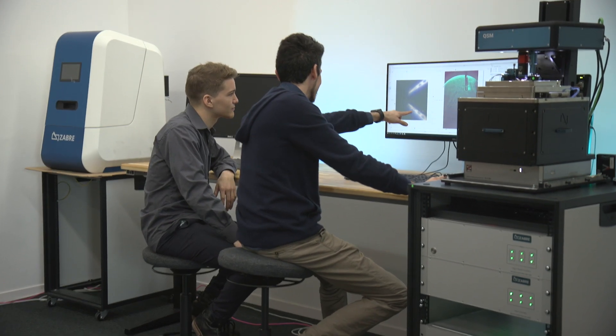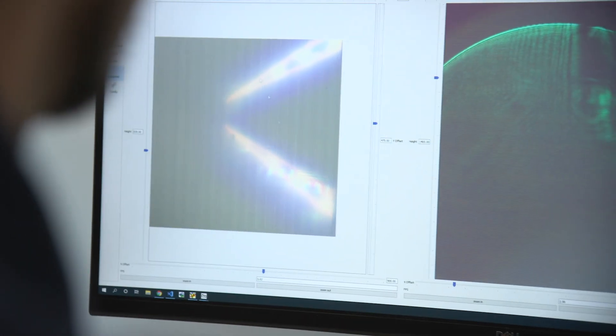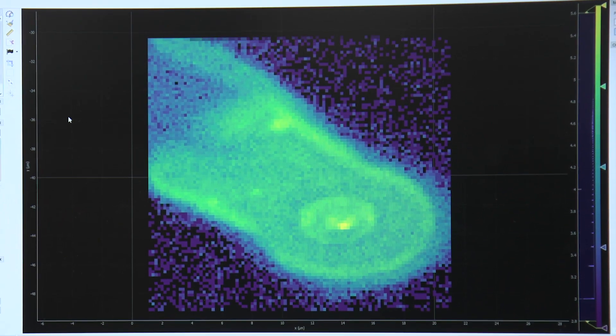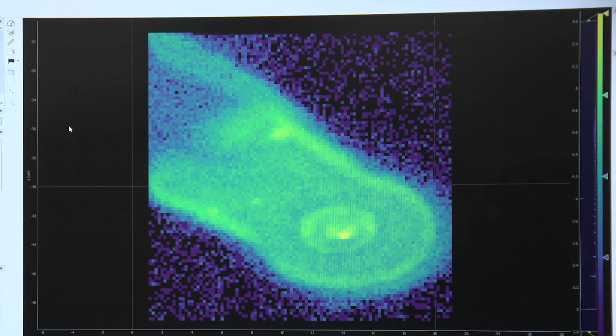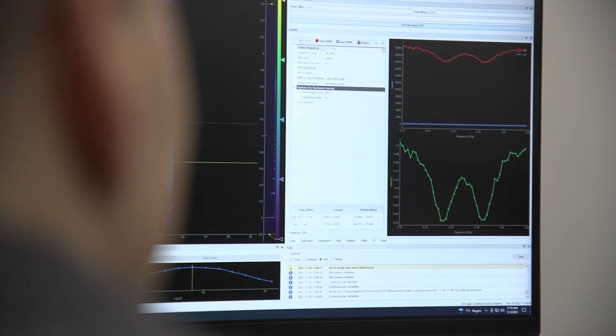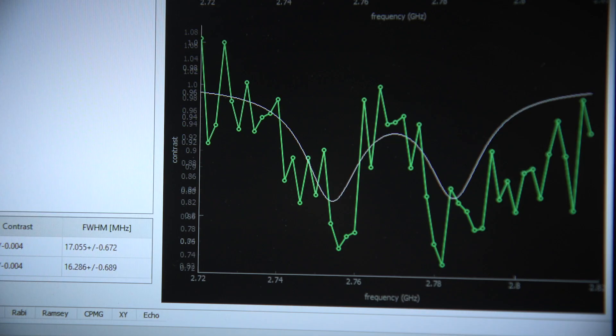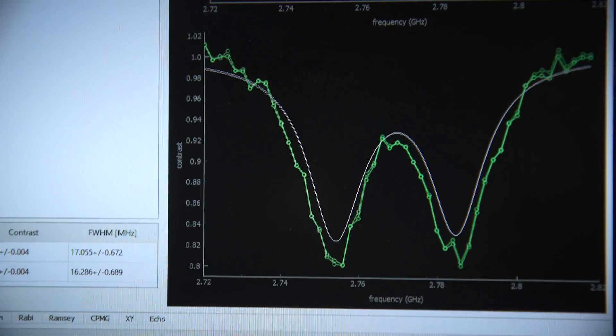And then we will run an ODMR experiment where we sweep microwave frequency and detect the fluorescence contrast. And by applying different lengths of microwave pulses, we will drive Rabi oscillations and measure those.